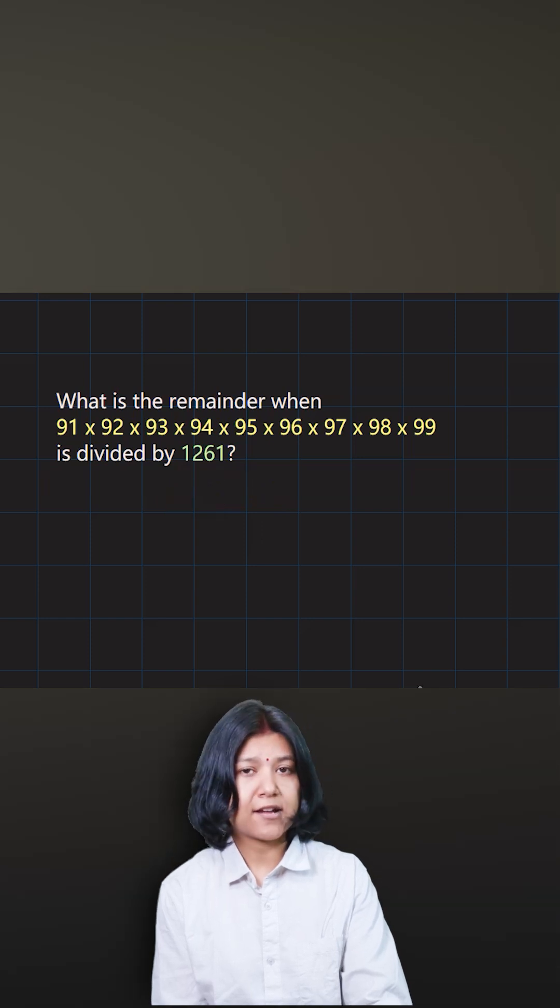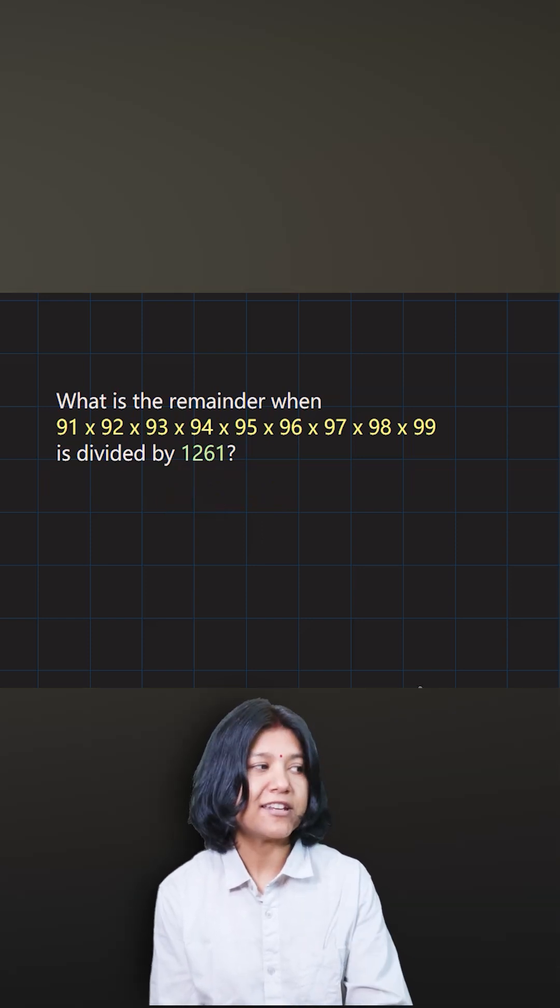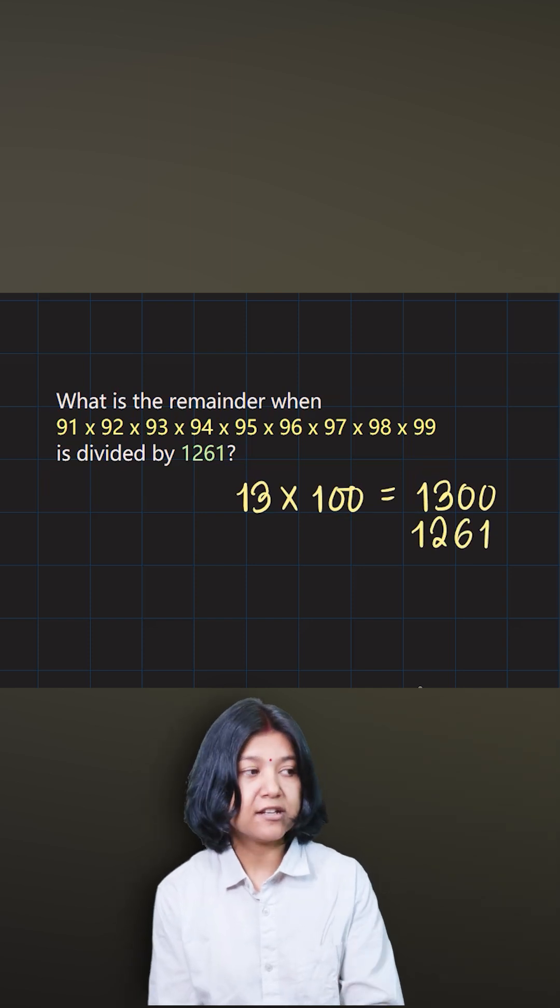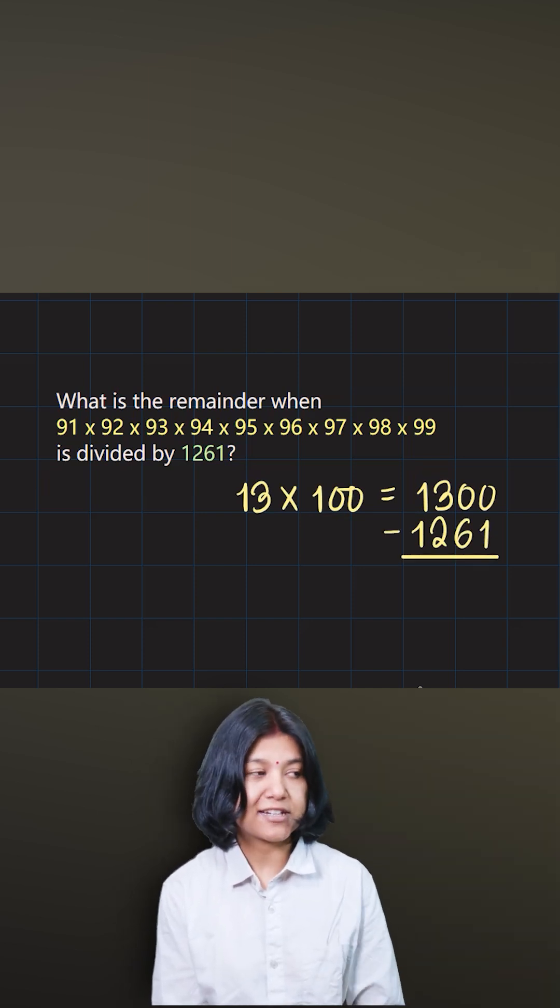Now what do we do? We check by the last number maybe yeah 13. How to check for 13? 13 times 100 is 1300 and from 1300 if I remove this number and if I figure out that the remaining part is also a multiple of 13 then I can confirm. Let's check it out.